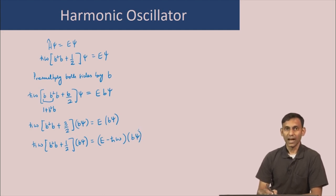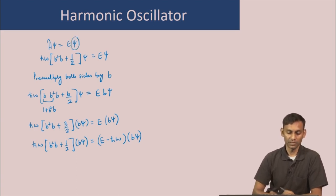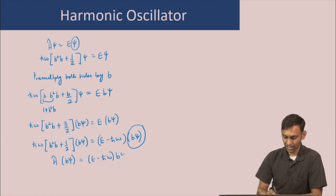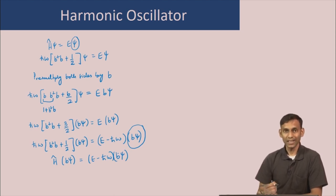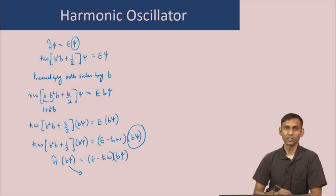So we see that if psi is an eigenfunction of the Hamiltonian, then b of psi is also an eigenfunction of the Hamiltonian, because here we have H of (b of psi) equals (E minus h-bar omega) b of psi. But b of psi has an eigenvalue which is less than the eigenvalue of psi by h-bar omega. This operator b acts on an eigenfunction of the Hamiltonian and gives a new eigenfunction with eigenvalue lower by h-bar omega.